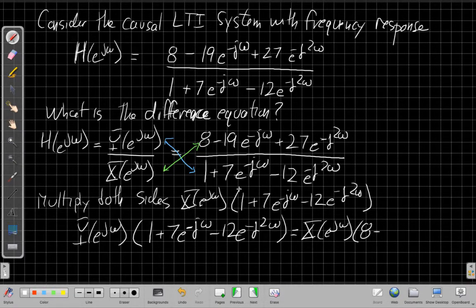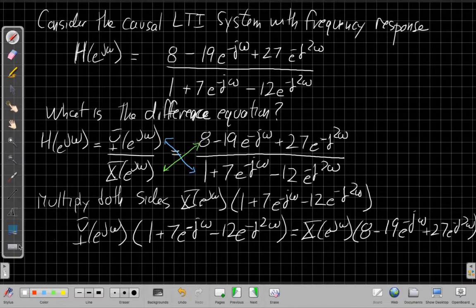So 8, when I multiply the right-hand side by this big term here, the denominator, these two things cancel out and I'm left with X times what was in the numerator. So 8 minus 19 e to the minus j omega plus 27 e to the minus j 2 omega. And so when I do that, I can now multiply these through. So let me do that next.